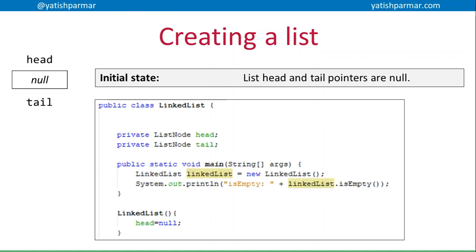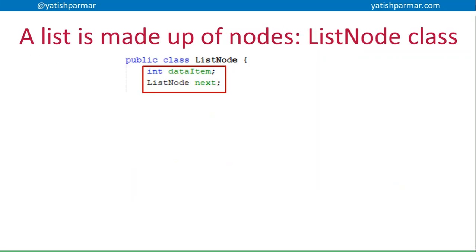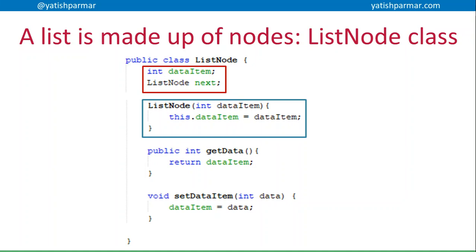When we create a list in the first instance, the head and tail pointers were null because there is no actual node being stored. You can see in the constructor that the head at that time is null because there is no data being stored. A list was made up of nodes, so we had a ListNode class where we stored a data item and a pointer to the next item, which itself was a recursive ListNode.